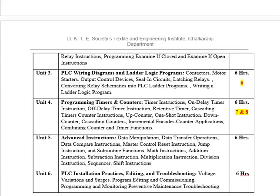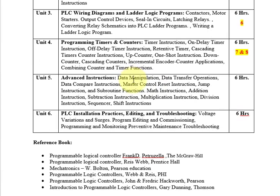Unit 5 covers advanced instructions: mathematical instructions, jump control instructions, data transfer instructions, sequencer instructions, and shift instructions. Unit 6 covers maintenance of PLC based systems — voltage variation, surges, grounding, identifying faults in input and output modules, and the procedure for preventive maintenance.